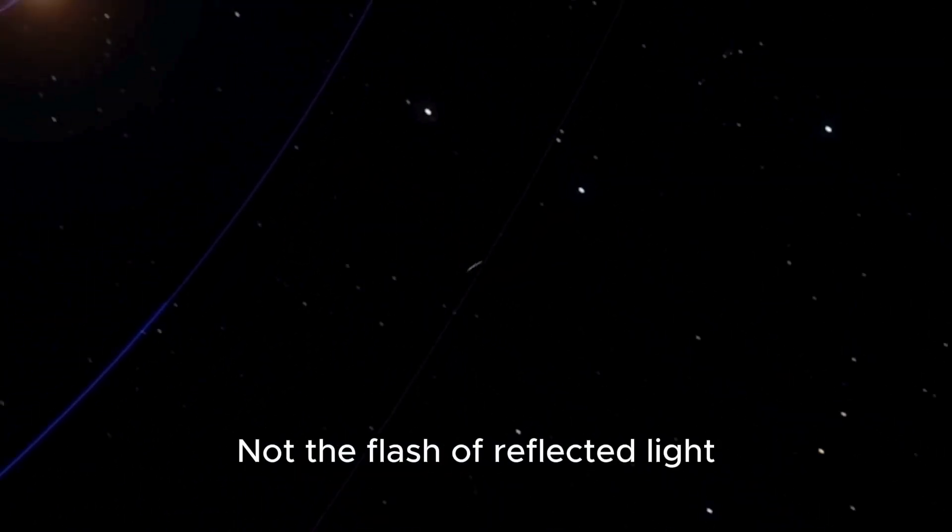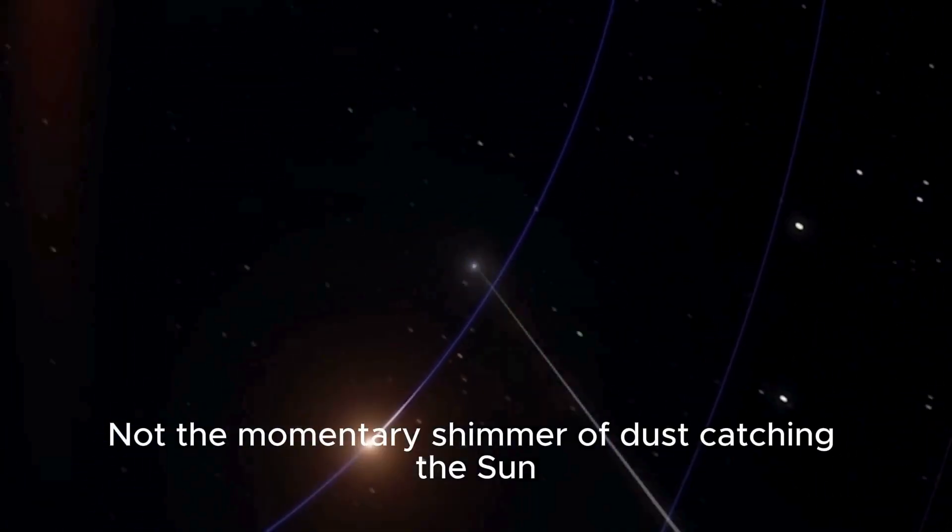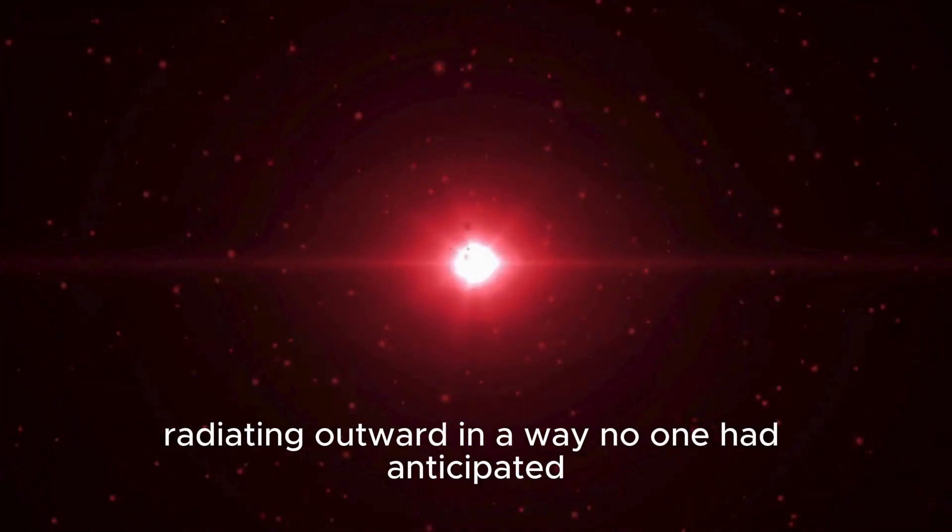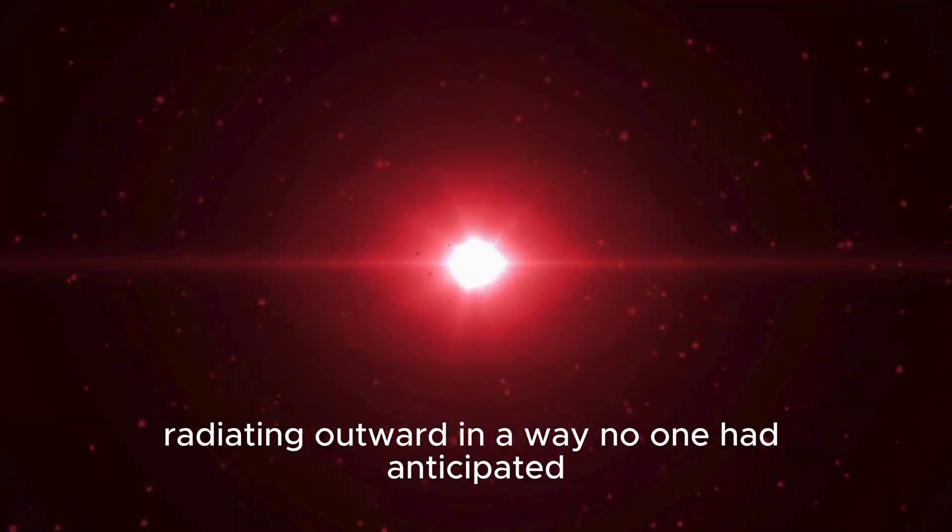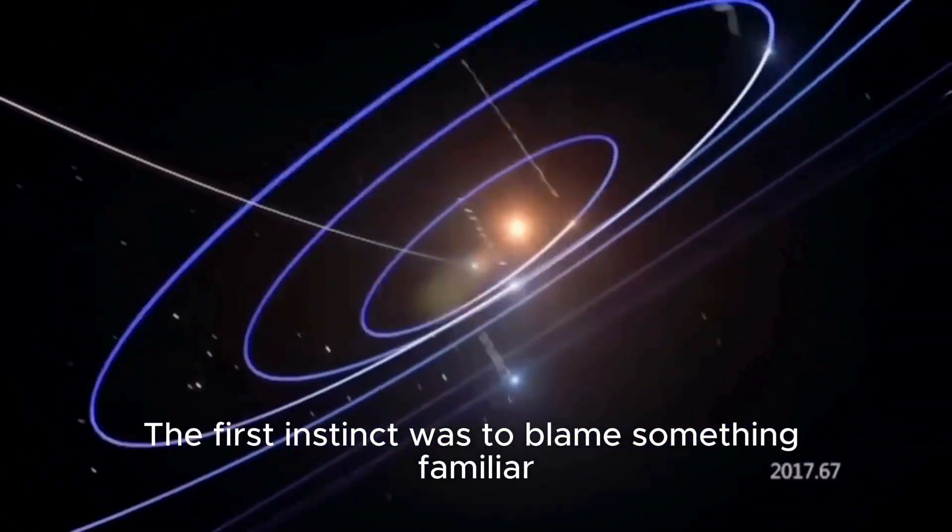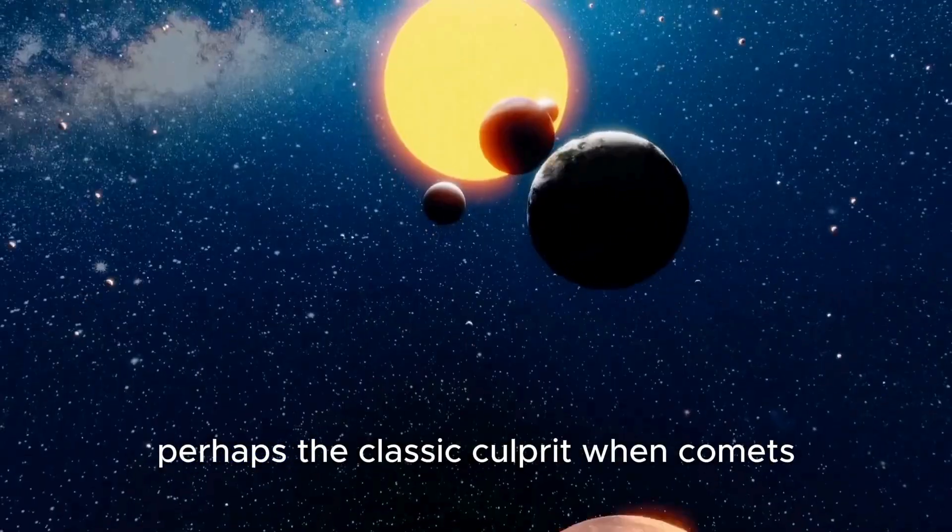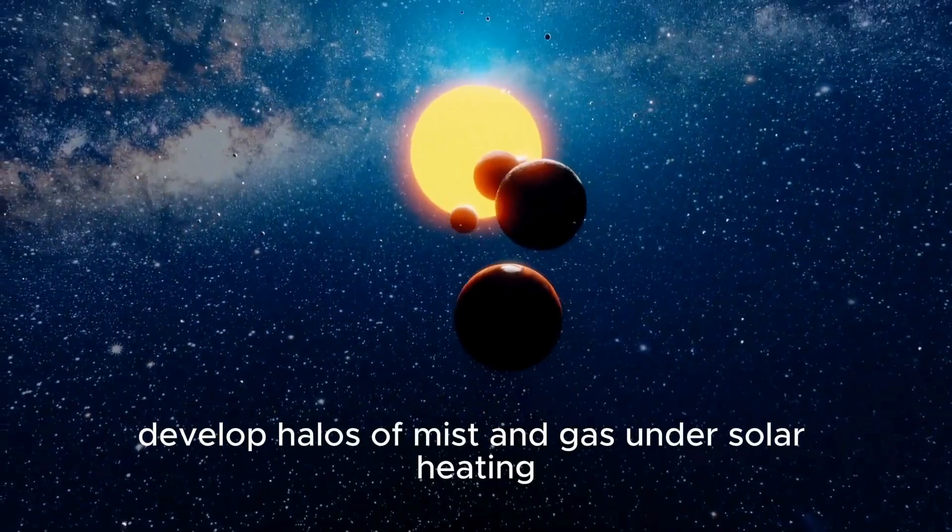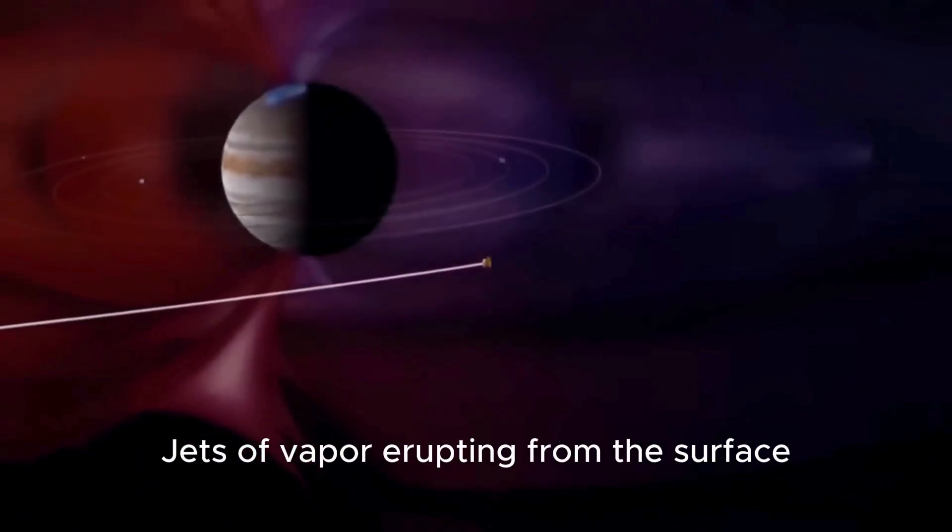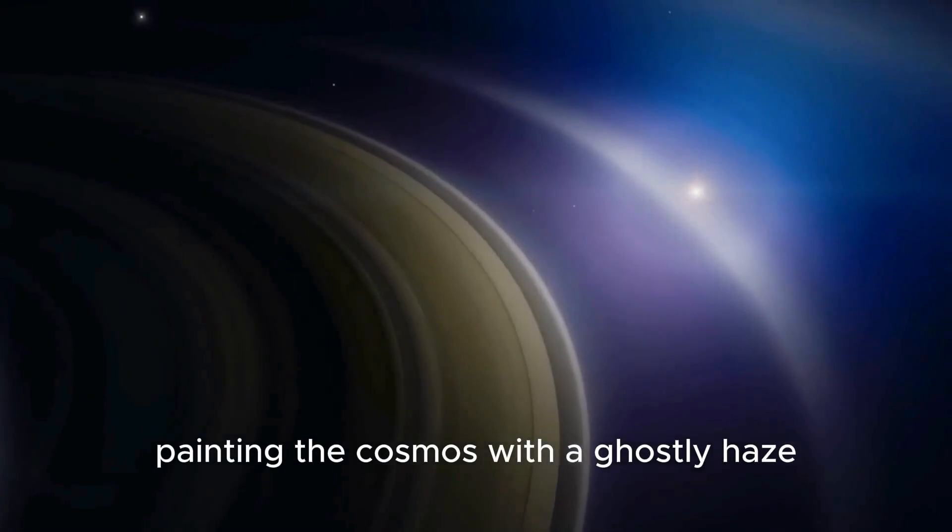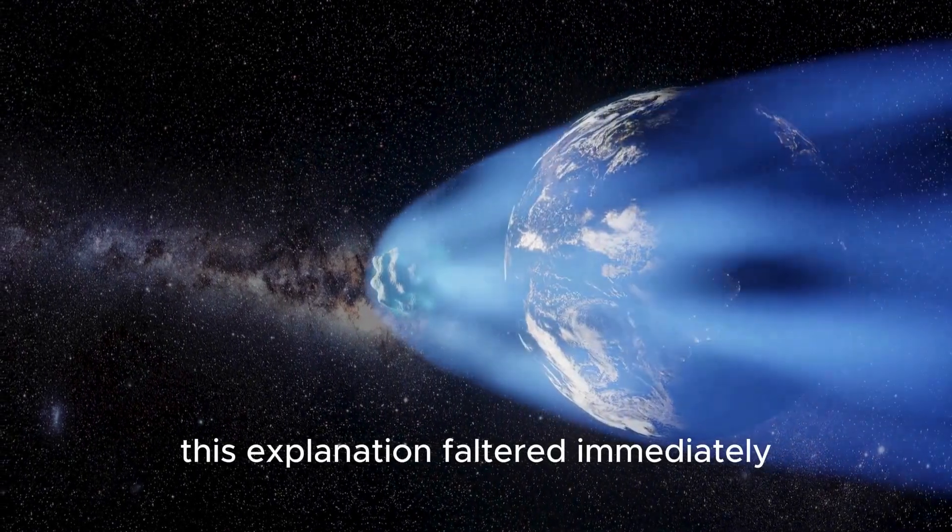Not the flash of reflected light. Not the momentary shimmer of dust catching the sun. But an extended luminosity, radiating outward in a way no one had anticipated. The first instinct was to blame something familiar. Outgassing, perhaps. The classic culprit when comets develop halos under solar heating. Yet, this explanation faltered immediately.